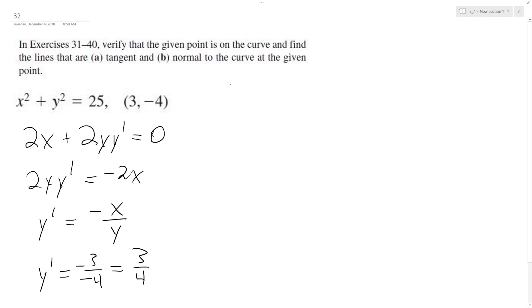That's the slope of the tangent line. So y minus y1, so -4, equals 3 over 4, x minus 3. So distributing everything, we get y plus 4 equals 3 over 4 x minus 9 over 4. Subtract 4 from both sides, we end up with y equals 3 over 4 x minus 25 over 4.